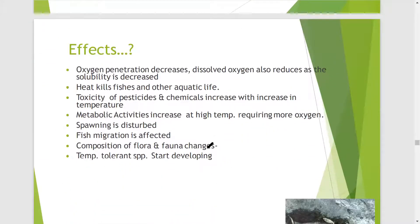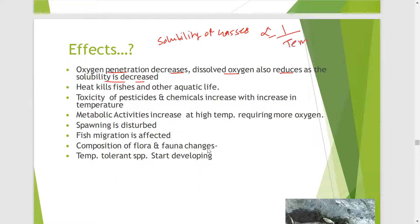What are the possible effects of thermal pollution? First, oxygen penetration decreases. Dissolved oxygen also reduces because solubility of gases in water is inversely proportional to temperature. As the temperature of a liquid increases, the solubility of a gas in the liquid decreases. So increased water temperature leads to hypoxia — a situation in which dissolved oxygen decreases.